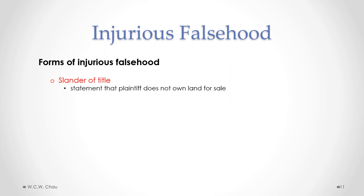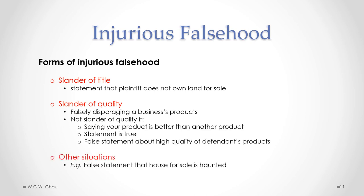There are different forms of injurious falsehood. Slander of title is a false statement about the ownership of land that is put up for sale. Slander of quality is a false disparaging statement about a business's products — it is not slander of quality if you say your product is better than another, or if the negative statement turns out to be true, or if the statement is a false claim of high quality about your own products. Other situations can also involve injurious falsehood — for example, there is a case where a false statement was made that a house for sale was haunted in order to prevent its sale.